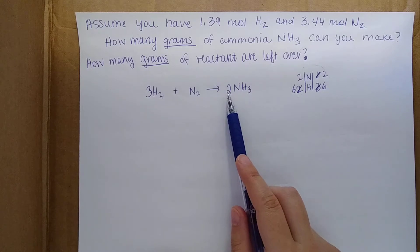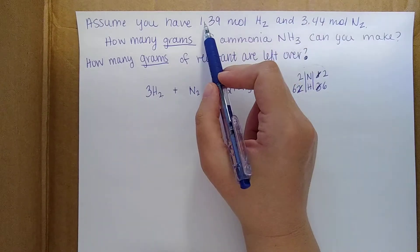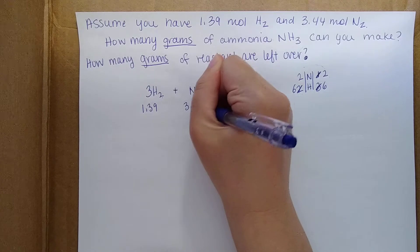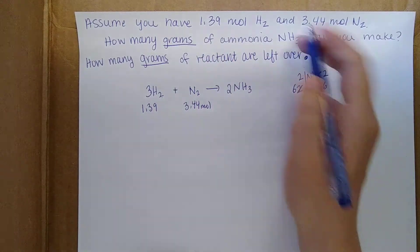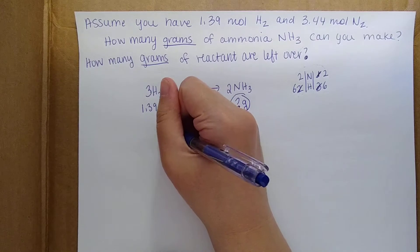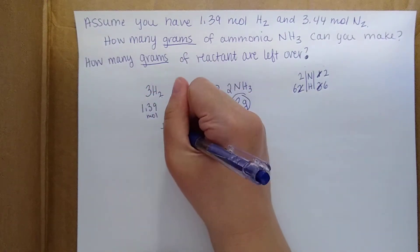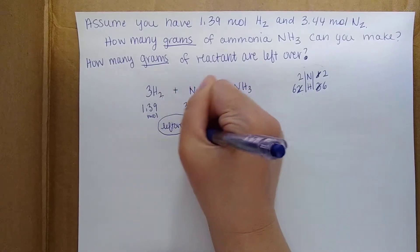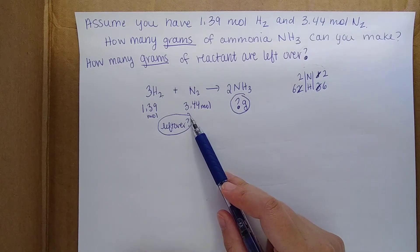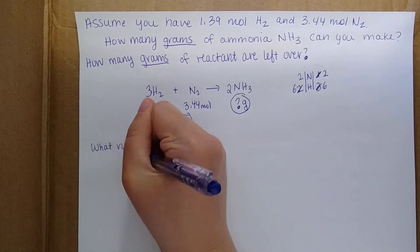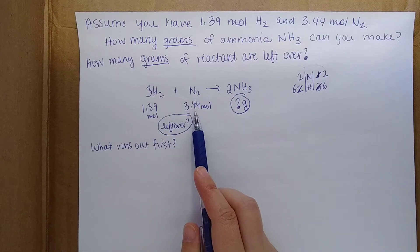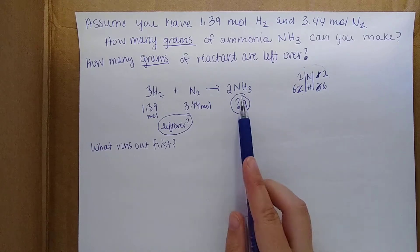The next step is to write down our given information. We begin with 1.39 moles of H2 and 3.44 moles of N2. We're solving for how many grams of product we can make, and also how much reactant is left over. Just like last time, we need to figure out what runs out first — that's our limiting reactant. We'll take each reactant, react it all the way, and see how many grams of product we end up getting.